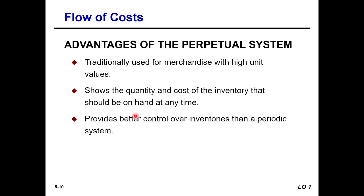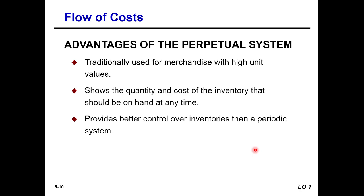The advantages of the perpetual inventory system include: it is traditionally used for merchandise with high unit values, such as computers, refrigerators, mobile phones, and TVs — items that are countable. It shows the quantity and cost of inventory on hand at any time, and it provides better control over inventories than the periodic system. Overall, the perpetual system is better than the periodic system.